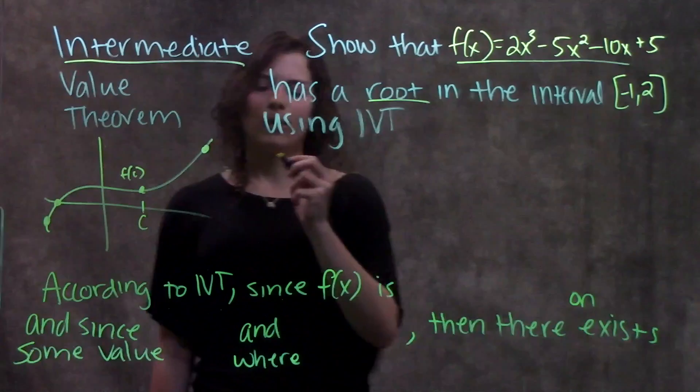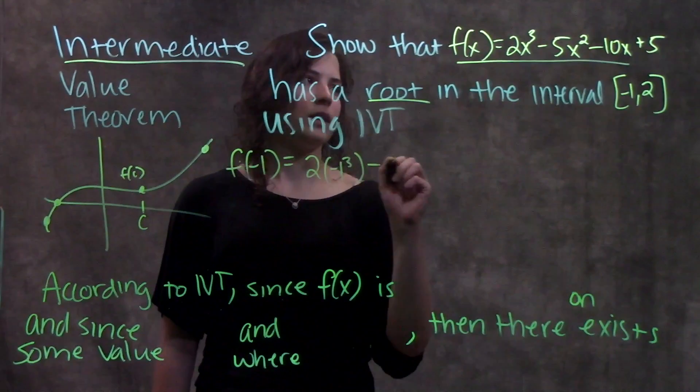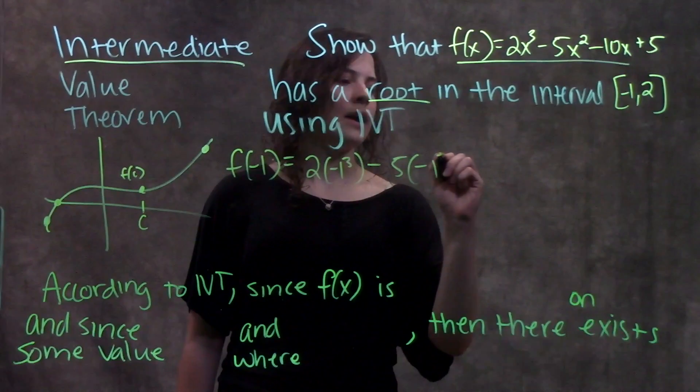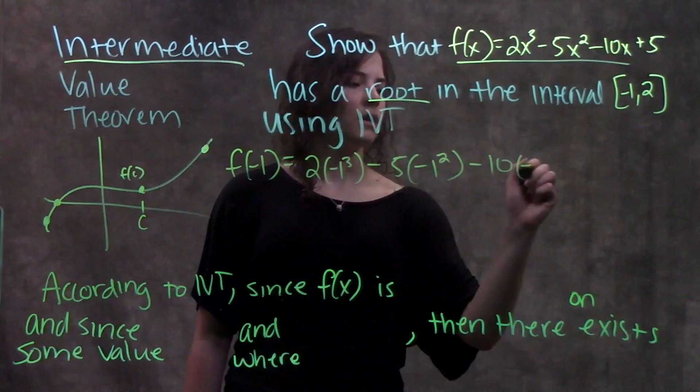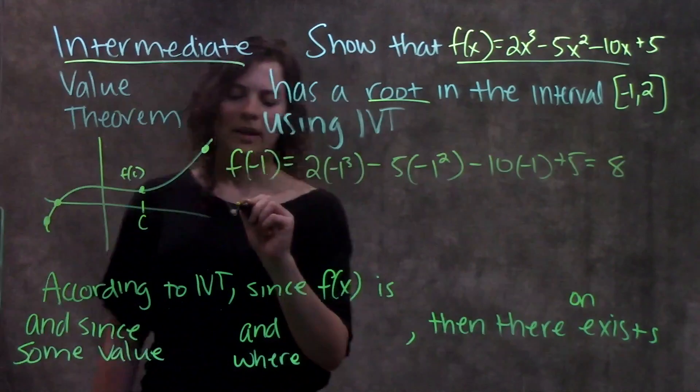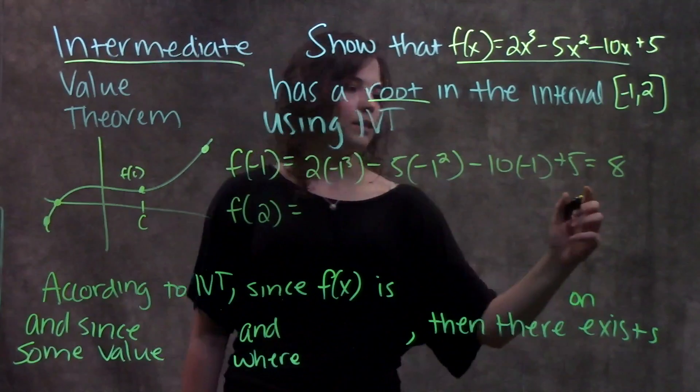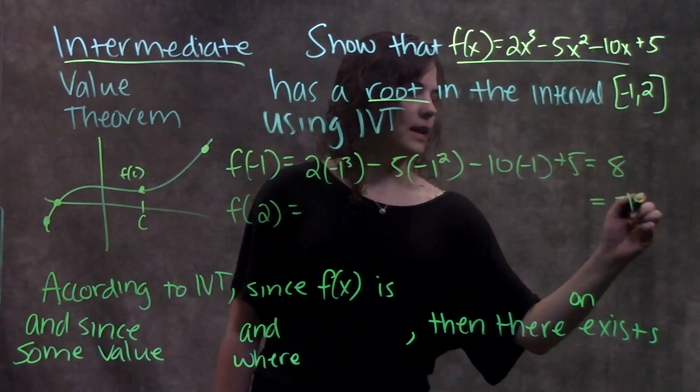So we'll start with negative one. We plug f of negative one into our function. We get two times negative one cubed minus five, negative one squared, negative one plus five. Plug all that in, you should get eight. And we're going to do the same thing with two. When you plug two in everywhere you see an x, you should get negative 19.